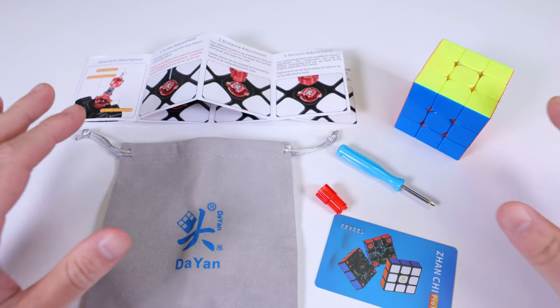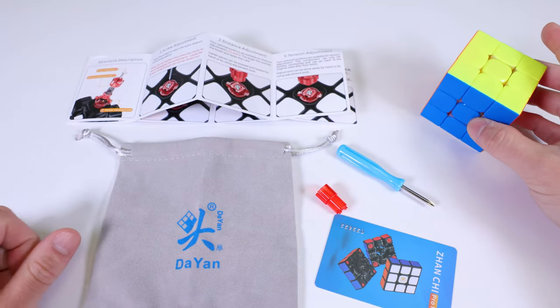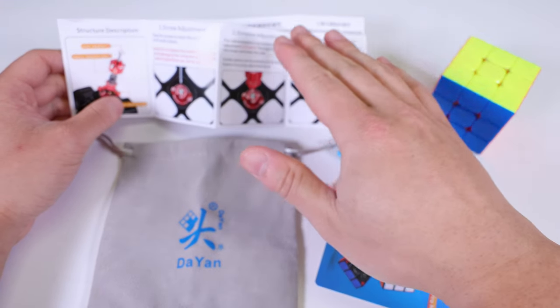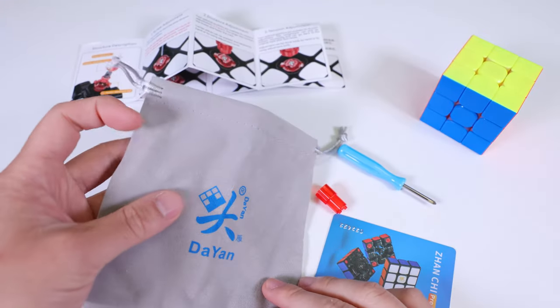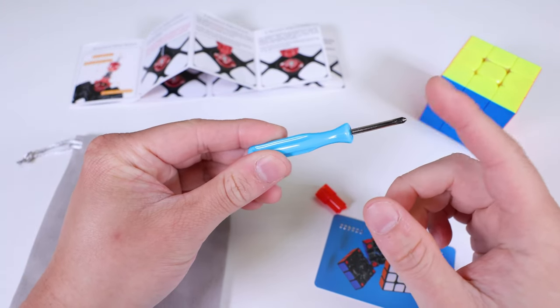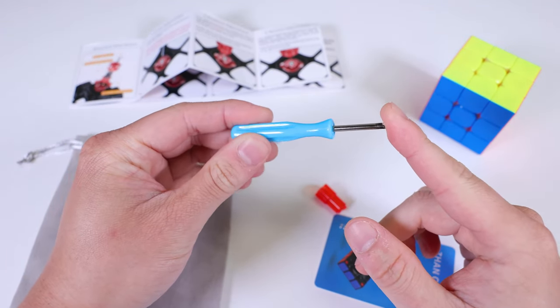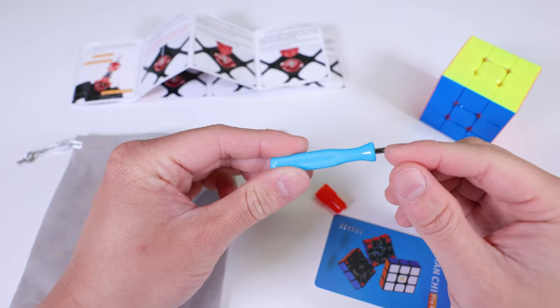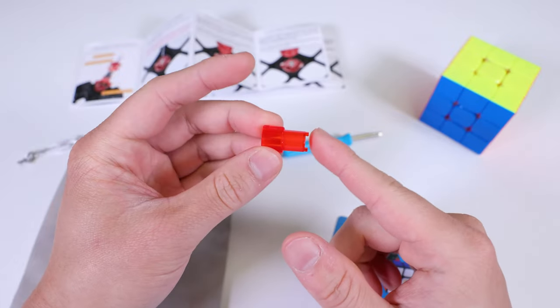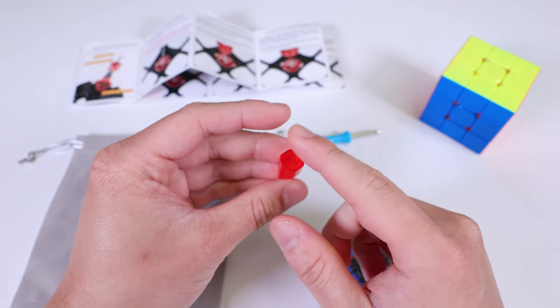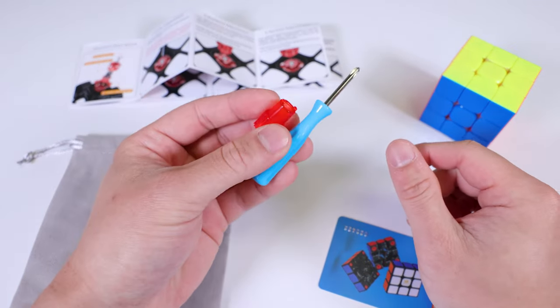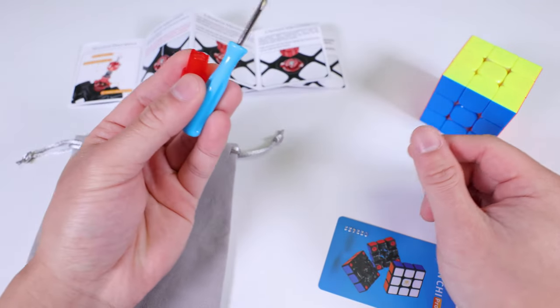So this is what comes with the cube inside the box. Besides the cube itself, we have a pamphlet that explains the features. We don't really need this because I'm going to explain the features in this video. We have this nice bag. This screwdriver is used to both adjust the cube and also change the magnet strength, so it's multifunctional. And this is also a multifunctional tool. The short end does something else, and then this wide end adjusts tension. So each tool in this cube serves more than one function, which is pretty cool.